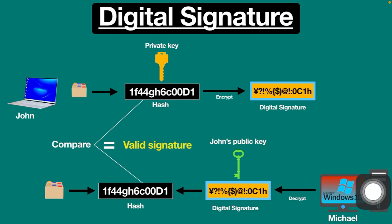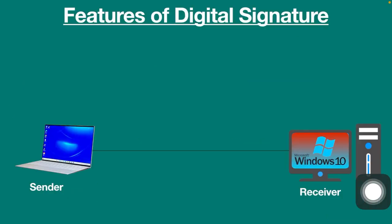So that's how digital signatures work. They are used in financial transactions, cryptocurrency, government agencies, email messages, healthcare, manufacturing, software distribution, and more. Digital signatures are also used to meet three important features of information security.